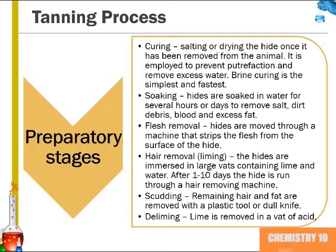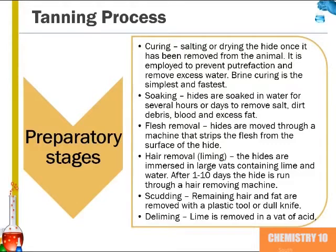From there, the hides are soaked in water for several hours to days to remove salt, dirt, debris, blood, and excess fat. After the soaking process, hides are moved through a machine that strips the flesh from the surface of the hide. Hair removal or liming is the process in which hides are immersed in large vats containing lime and water. After 1 to 10 days, the hide is run through a hair-removing machine. Scudding is the removal of remaining hair and fat using a plastic tool or dull knife. Finally, the skins undergo a deliming process where the remaining lime is removed in a vat of acid.